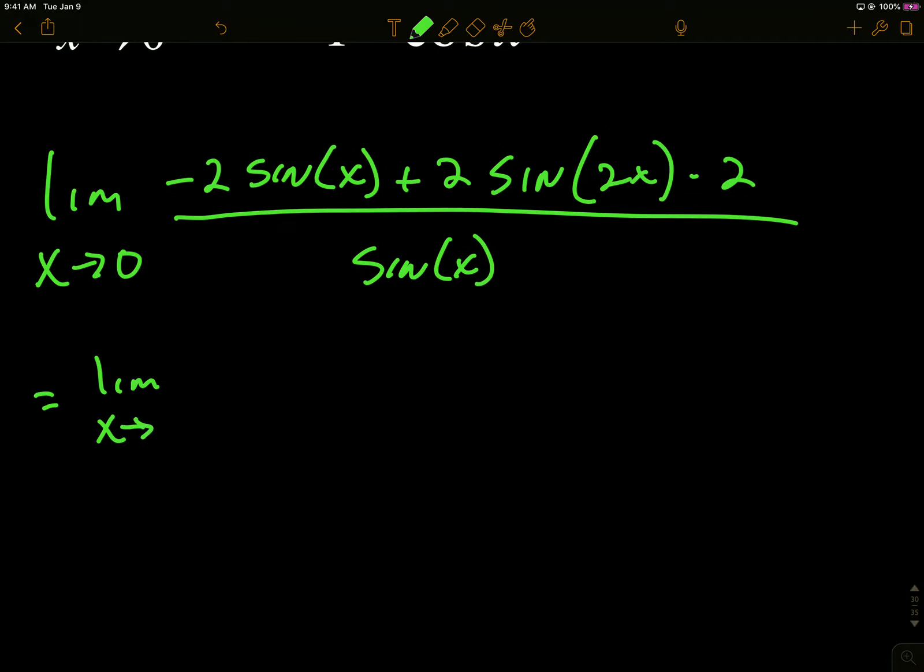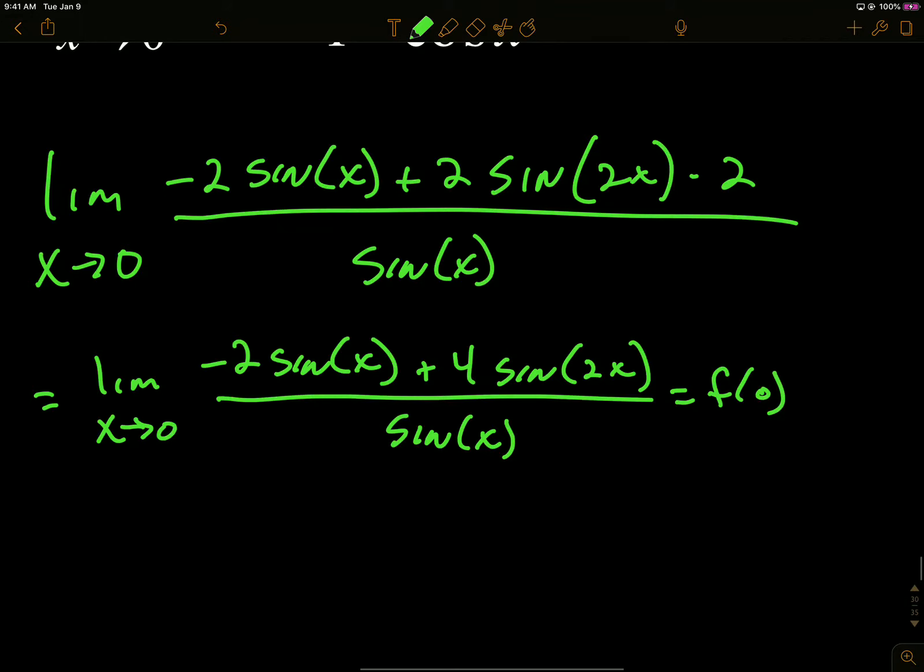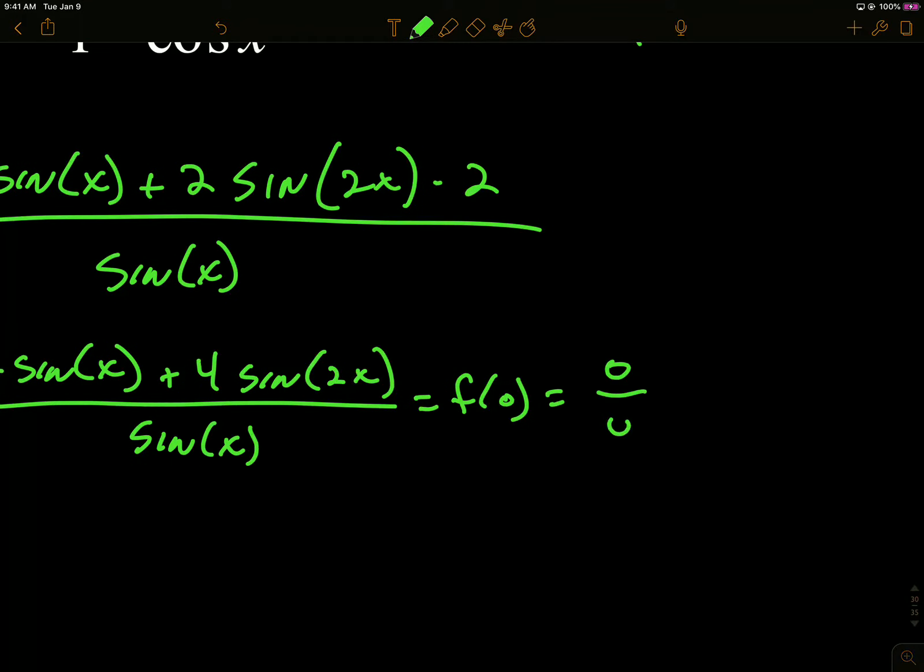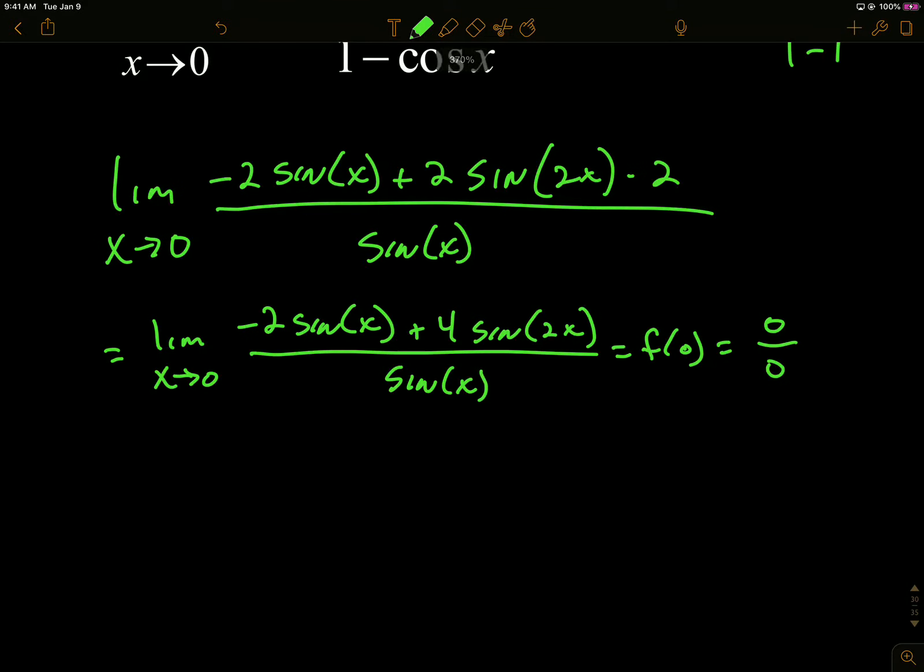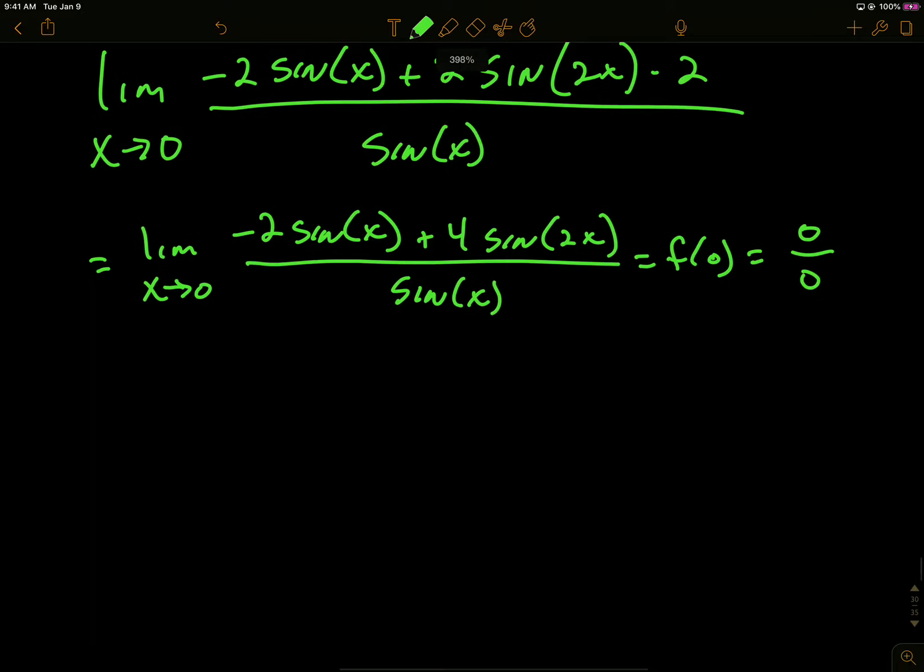It's insane, I know it's crazy, but we're going to try it. So let's simplify this a little bit. I got negative 2 sine of x plus 4 sine of 2x all over sine of x. So if I plug in 0 for a direct substitution here after I L'Hôpital, I get 0 over 0 again, because sine of 0 is 0 in all these instances. So everything's 0, so we're going to L'Hôpital the L'Hôpital.